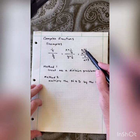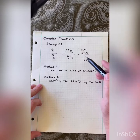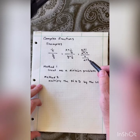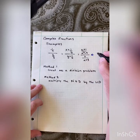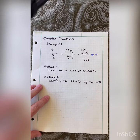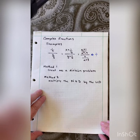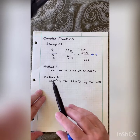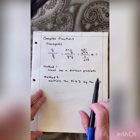Then we have a plus one over a squared minus nine, over two over a plus three. The fraction bar means divided by. And there are two ways of simplifying these: method number one is to treat it as a division problem.